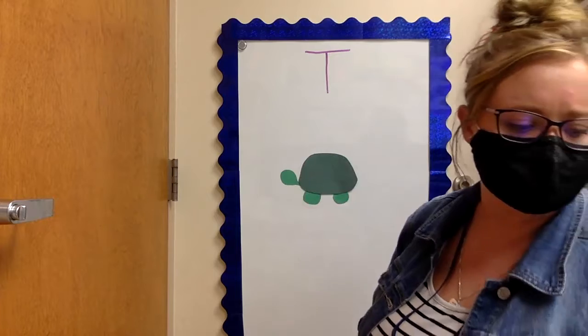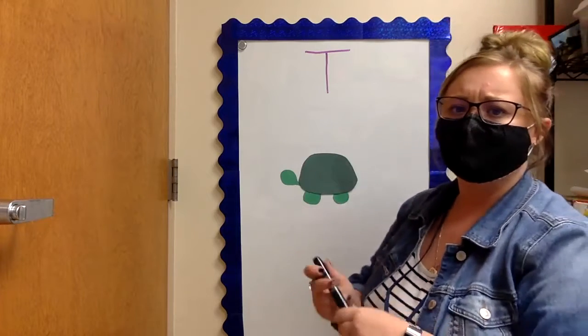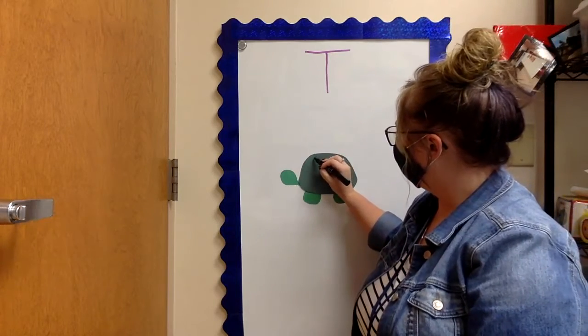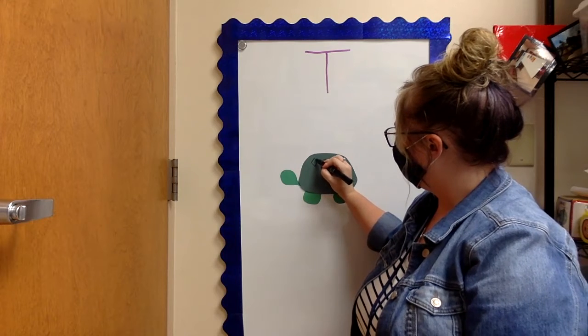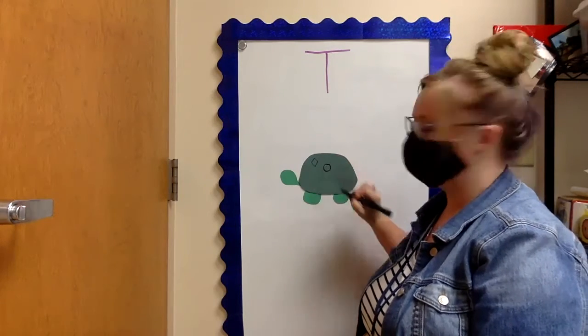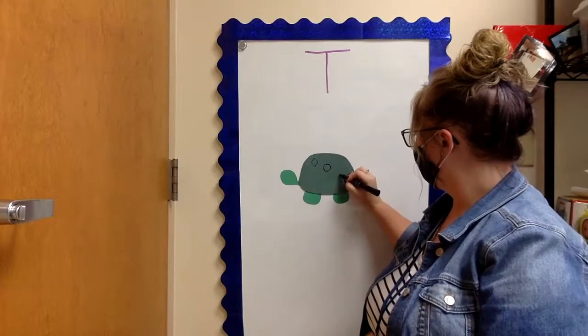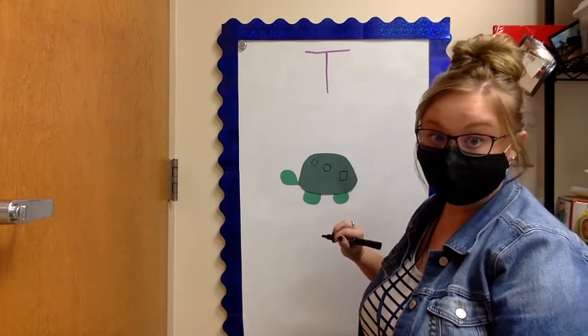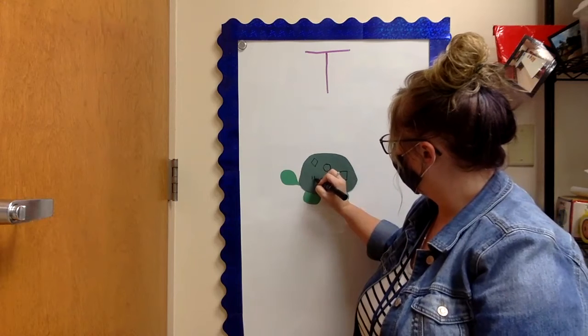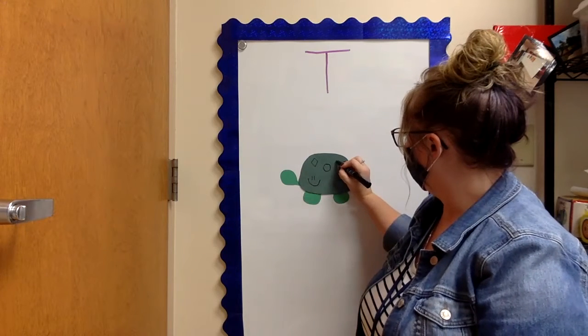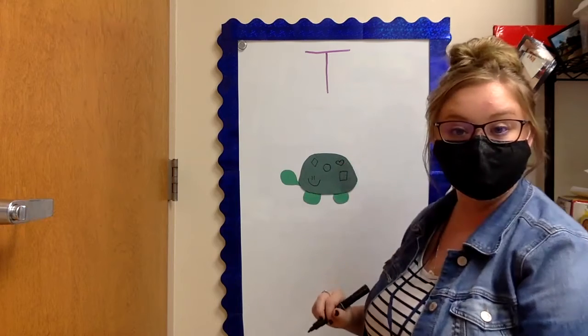Now my turtle needs some shapes. Yes. I'm going to make some shapes on his shell. I'm going to make a diamond. A circle. A square or a rectangle. A happy face. And a heart.